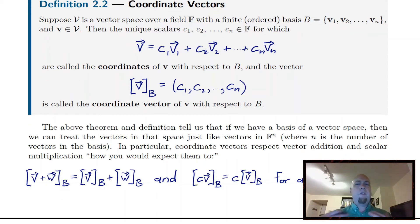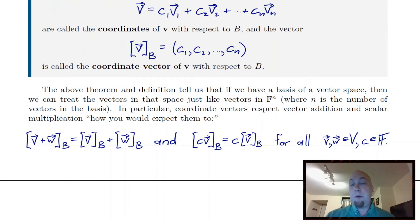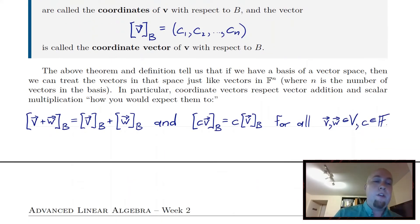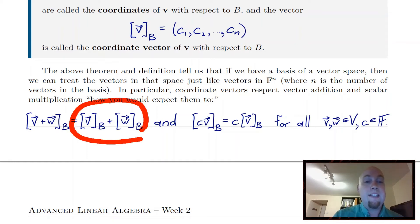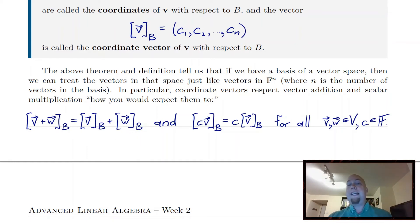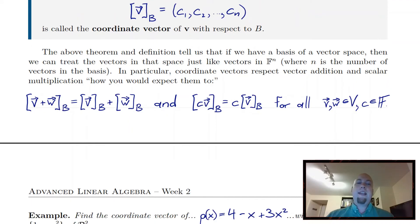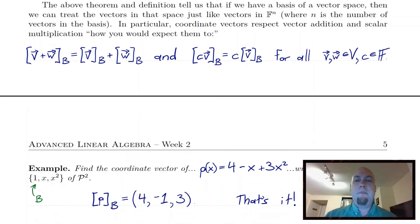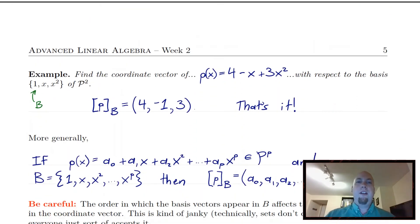Before we start doing examples, it's important to note that arithmetic with coordinate vectors works how you might expect. If you take the coordinate vector of the sum of two vectors, that's the same as taking the coordinate vectors individually and then adding them up. Similarly with scalar multiplication — it doesn't matter if you do it before or after you compute the coordinate vector. So scalars and vector addition both pull out of coordinate vectors.